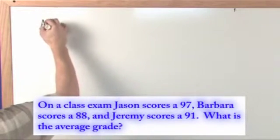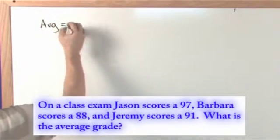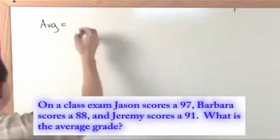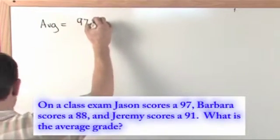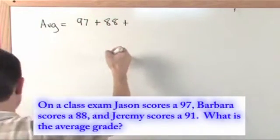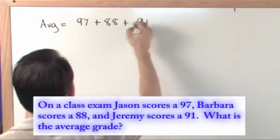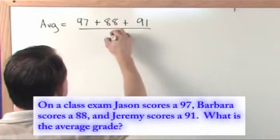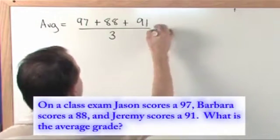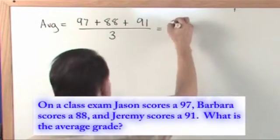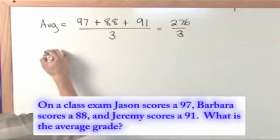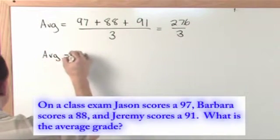The average is the sum of the grades divided by the number. So if Jason scores a 97 and Barbara scores an 88 and Jeremy scores a 91, you just add them up and you divide by 3 and that's the average. When you do the math on the top, you get 276 divided by 3. So the average is 92.